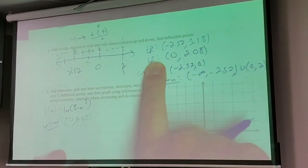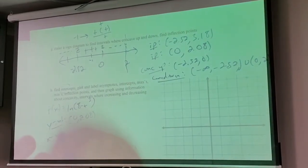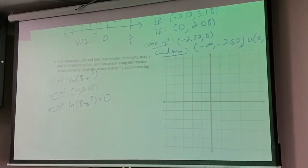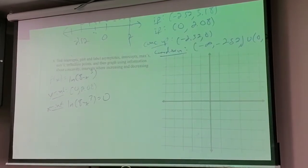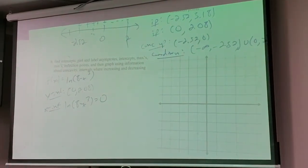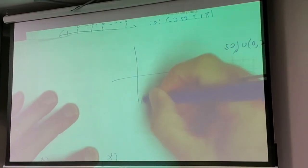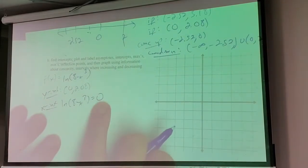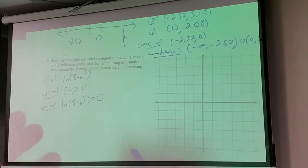Wait - can the natural log be zero? Let me make sure. The output can't be zero? Actually the natural log of 1 is zero, so ln can equal zero. I made a mistake - I said there are no x-intercepts but that's wrong. Setting ln(8 - x³) = 0 means 8 - x³ = 1, so x³ = 7, meaning x = cube root of 7 ≈ 1.91. So there is an x-intercept - it's a self-check: if it's decreasing with an asymptote, it has to go through the x-axis.